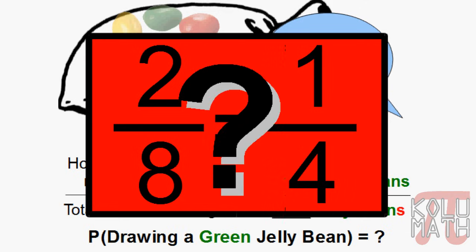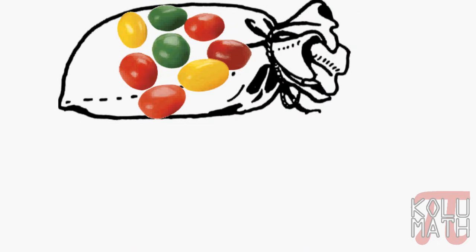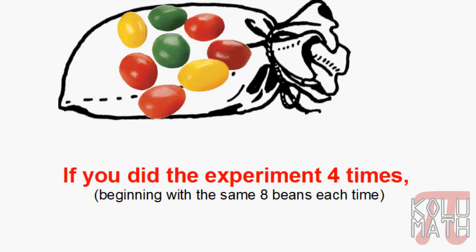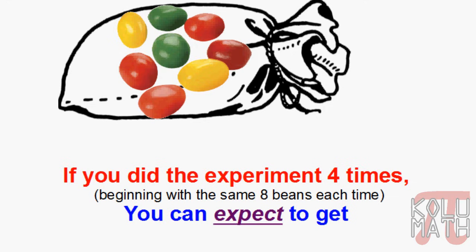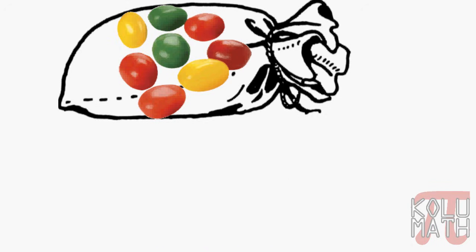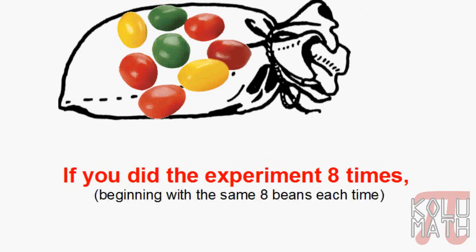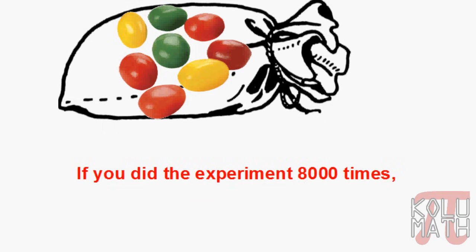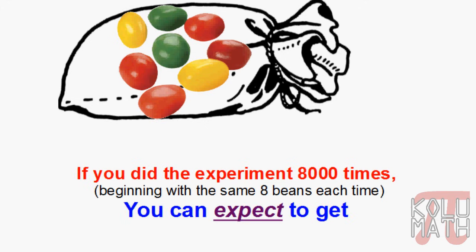But what exactly does that mean? There are a couple of different ways we can look at it. The first way is to use the fraction and convert it into an expression: if we did the experiment four times, beginning with the same eight beans each time, you can expect to get about one green. We can extend that: if we did the experiment eight times, we can expect two greens; if we did it eight thousand times, we would expect around two thousand greens.